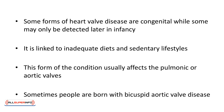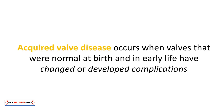Sometimes people are born with bicuspid aortic valve disease, where there are only two leaflets instead of the normal three, often causing the valve not to open or close properly. Acquired valve disease occurs when valves that were normal at birth and in early life have changed or developed complications.